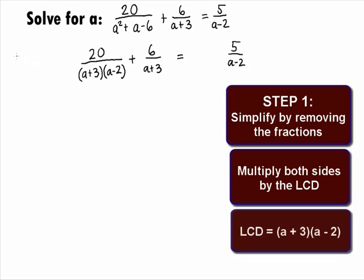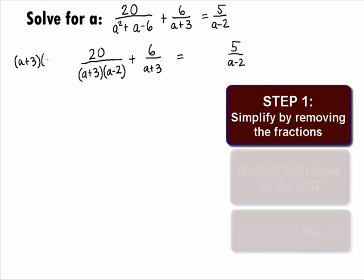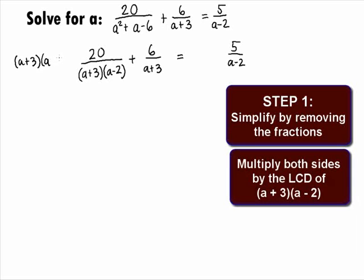The factors of our denominators are a plus 3 and a minus 2, so our Least Common Denominator is a plus 3 times a minus 2. Let's see what it looks like when we multiply both sides by that Least Common Denominator of a plus 3 times a minus 2.